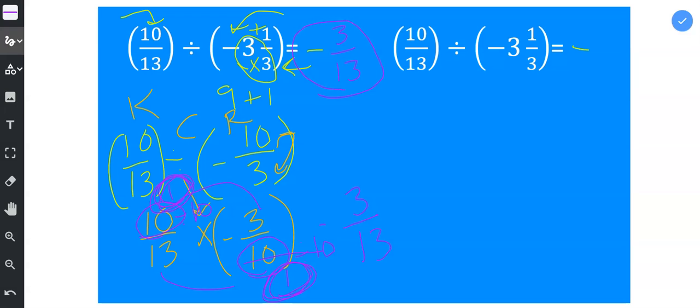Now, I want to show you another way to do it, and I'm going to skip all the way down to this part, where I wrote 10 thirteenths times negative 3 tenths. And what you could do is you could multiply first, and then reduce.